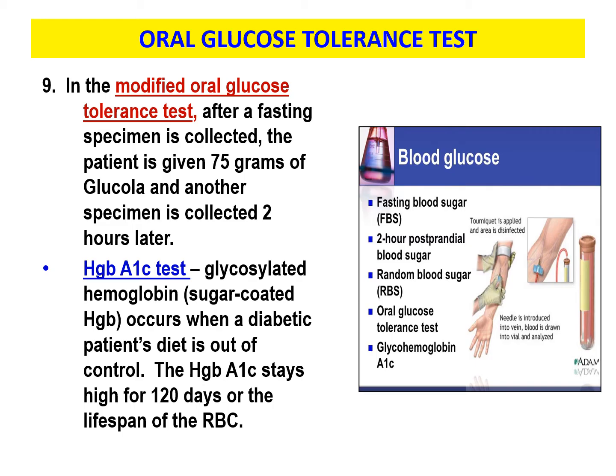Now let's talk about the hemoglobin A1c test — glycosylated hemoglobin, which means sugar-coated hemoglobin. This occurs when a diabetic patient's diet is out of control. The hemoglobin A1c stays high for 120 days, or the lifespan of that red blood cell, so we can see what's going on with that patient over a longer period of time. We sometimes refer to the hemoglobin A1c test as the tattletale test.